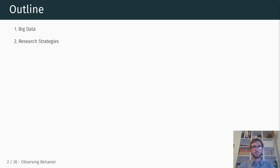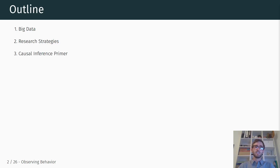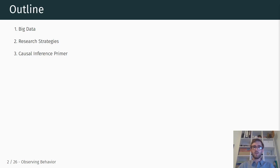I have three videos for you this week. In the first video we're going to talk briefly about what big data is and its characteristics. Secondly, there will be a video on research strategies using these big data sources. And then lastly, I'm going to talk about causal inference and specifically the potential outcomes framework, to give us a clearer framework of how we think about causal inference in the context of observational studies.